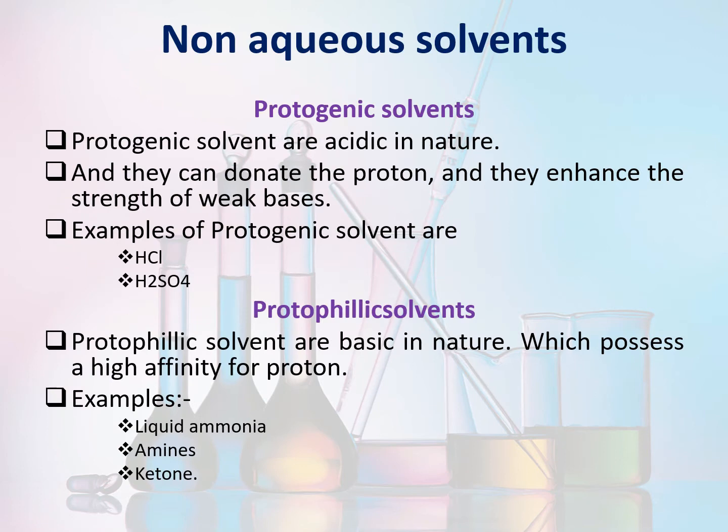Protogenic solvents are acidic in nature. They can donate the proton and they enhance the strength of weak bases. Examples include hydrochloric acid and sulfuric acid. Protofilic solvents are basic in nature and possess a high affinity for protons. Examples include liquid ammonia, amines, and ketones.